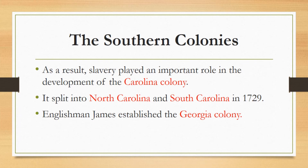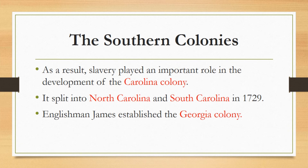By contrast, the Carolina colony — a territory that stretched south from Virginia to Florida and west to the Pacific Ocean — was much less cosmopolitan. In its northern half, hardscrabble farmers eked out a living; in its southern half, planters presided over vast estates that produced corn, lumber, beef, and pork, and starting in the 1690s, rice also. These Carolinians had close ties to the English planter colony on the Caribbean island of Barbados, which relied heavily on African slave labor, and many were involved in the slave trade themselves. As a result, slavery played an important role in the development of the Carolina colony. It split into North Carolina and South Carolina in 1722.